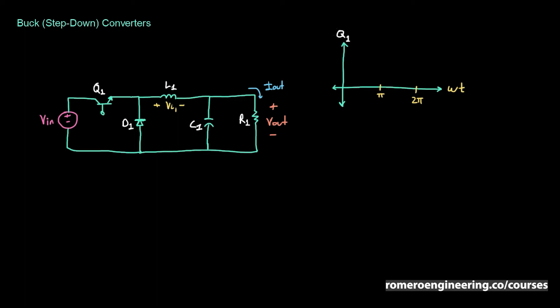For this example, Q1 is going to be switched on from 0 to pi, and then from pi to 2pi Q1 is going to be off, and then we repeat that. The period of this waveform is 2pi. We provide a control signal to Q1 to switch it on for only half of the cycle, and then remove that signal to turn it off for the remainder of the cycle.